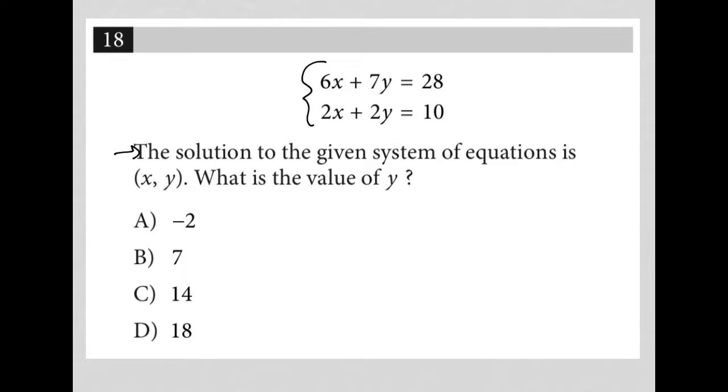The way this is set up for us, we should be using a process called elimination. This is one of the processes we can use whenever we have a system of equations. Basically, this process says you can multiply one or both equations by whatever you think is necessary in order to eliminate a single variable when you combine those two equations together.